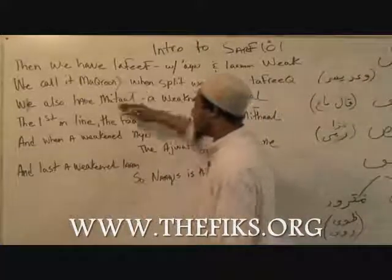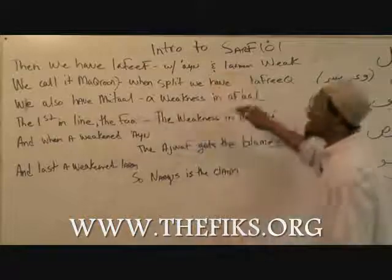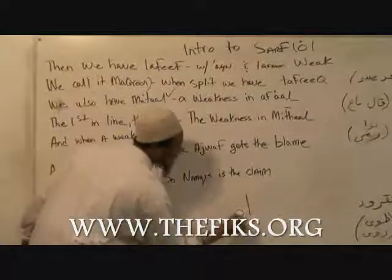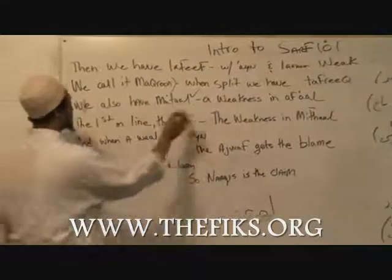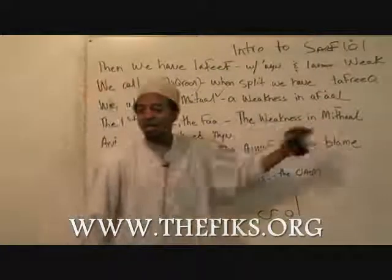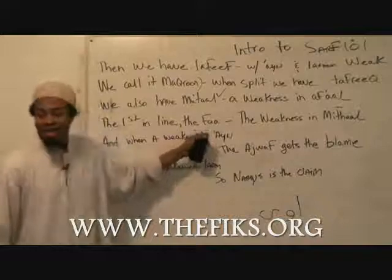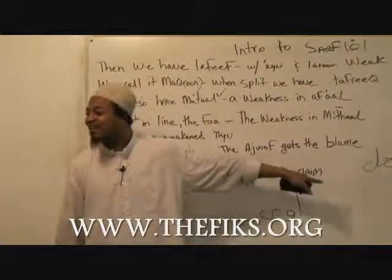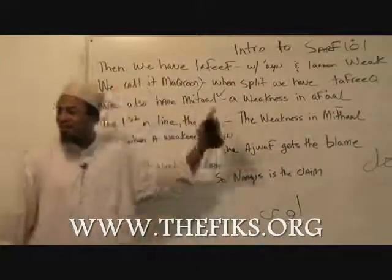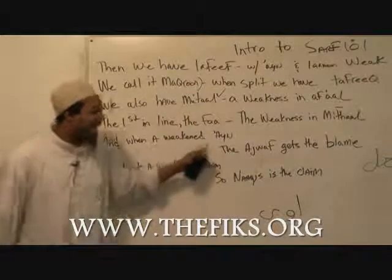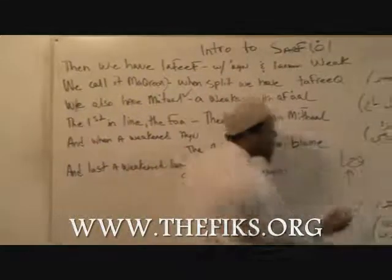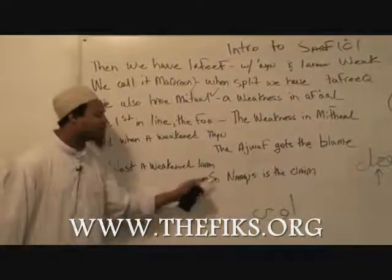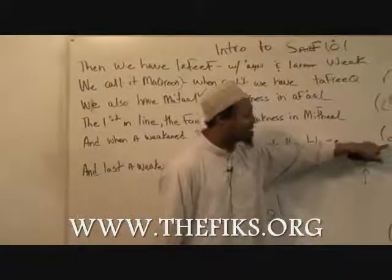We also have mu'tal — all these are mu'tal, but for the poem he said: we also have mu'tal, weakness in af'al. So the definition of a mu'tal is any verb, any af'al, that has a weakness in it. A weakness is defined as alif, wao, and ya. The first in line — the fa — the weakness in mythal. So if there is a weakness in the fa of the verb — if the word is fa'ala — then we know that this is called a mythal, like wa'ada and yasara. Then the poem says: and when a weakened a'in, the ajwaf gets the blame. So if there's a weakness in the a'in of the letter, we call it al-ajwaf. And last, a weakened lam — naqis is the claim. So when it has a weakened lam, we call it naqis.